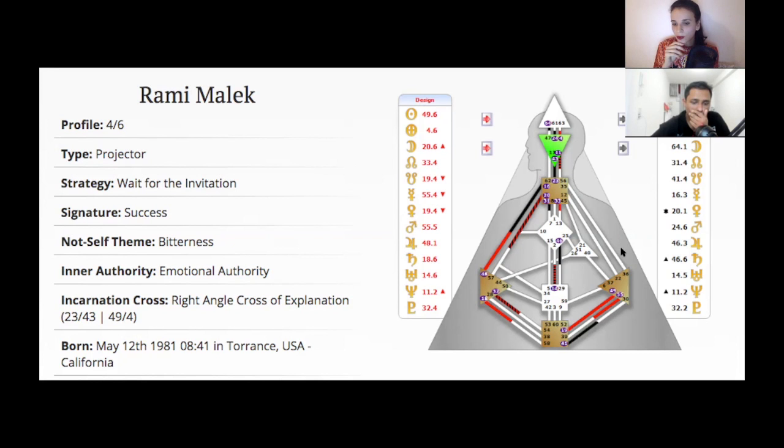And I also wanted to mention what these planets are. For instance, here he has Saturn here in the 18. So Saturn is what we have to do, our karma, our action, our work, so what we have to work through. And for him it's 18, like we talked before, getting things to the perfect form. This is what he has to do.